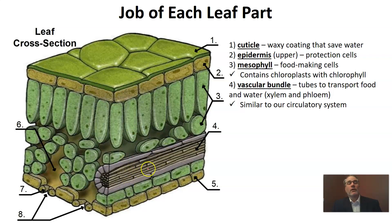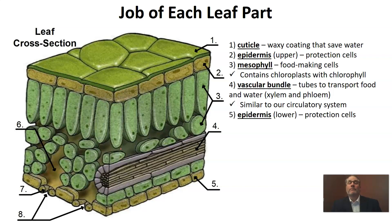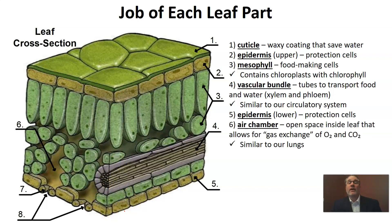The vascular bundle is something we looked at earlier. The vascular bundle is the tubes that transport food and water to every cell in the plant. If food is made in the mesophyll, it makes its way into this vascular bundle and goes elsewhere in the plant, and water from the roots also enters the leaf here. This vascular bundle is similar to our vascular or circulatory system.